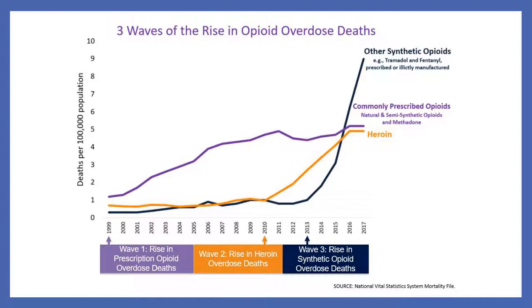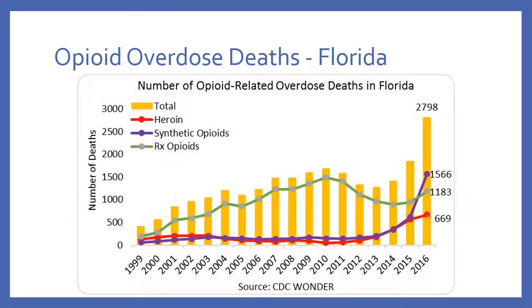Looking specifically at Florida's opioid-related overdose deaths broken down by type — the yellow bar is total, red line is heroin, purple line is synthetic opioids, and green line is prescription opioids — we see the same three waves: prescription opioids going up, peaking around 2011 then declining, heroin starting to peak as the second wave, and now synthetic opioids really taking off. We cracked down on pill mills and made it more difficult to get prescription opioids, but the total numbers are actually higher than they ever were. So did we really do a whole lot of good? It could be debatable.